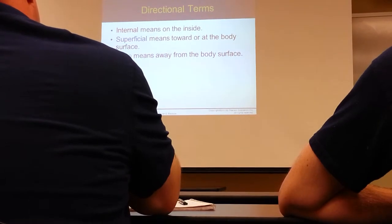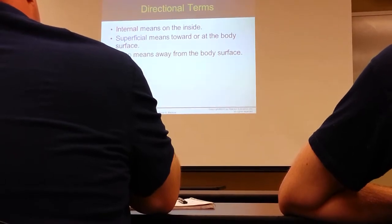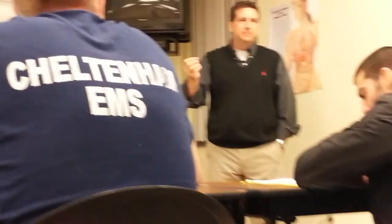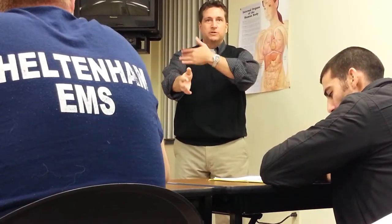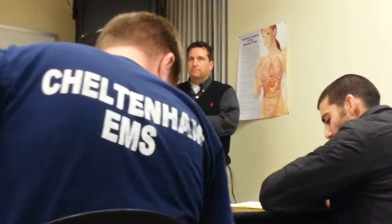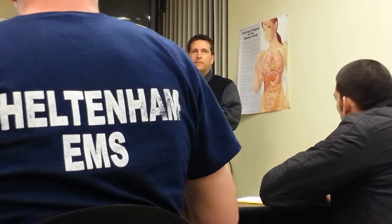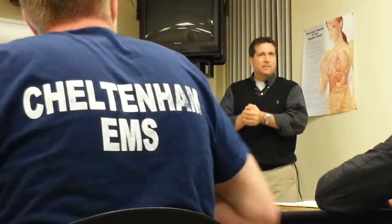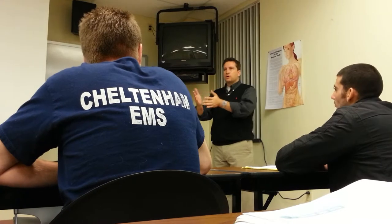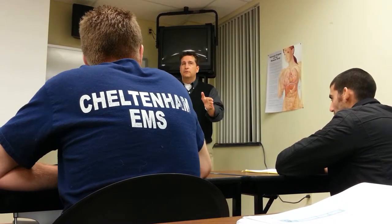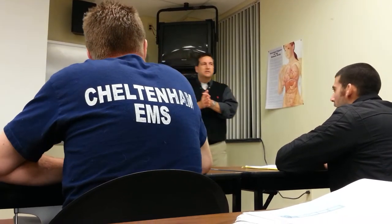Internal means inside. Superficial means more towards the outside. Deep, of course, is away from the body's surface — think of something like your bones. Your bones are actually pretty deep inside your body compared to the layers of other tissue around them. That's important because the body doesn't expect there to be bacteria — or at least not a lot — around your bones. The body puts its defenses for bacteria more towards the outside, so as you get deeper and deeper, the body has less and less of those defenses.